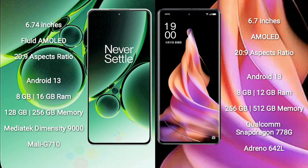OnePlus Nord 3 runs on the Android 13 operating system. OPPO Reno 9 also runs on the Android 13 operating system.